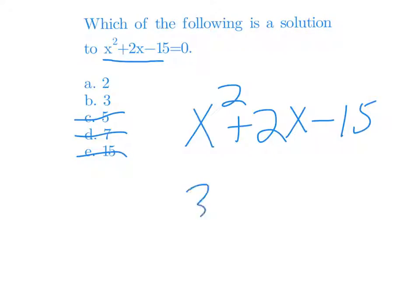3 squared plus 2 times 3 minus 15. Well, 3 squared is 9, plus 2 times 3. That's 6. 9 plus 6 is 15. 15 minus 15 equals 0. That's what it's supposed to equal.